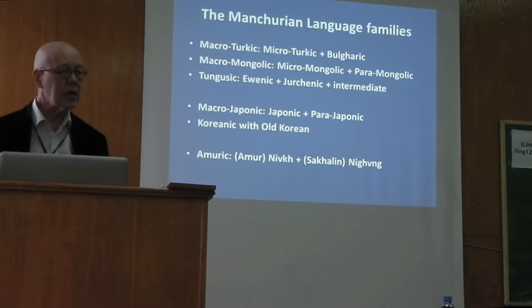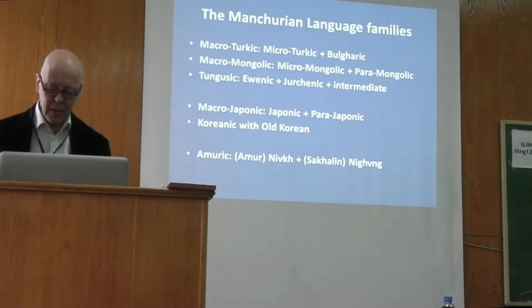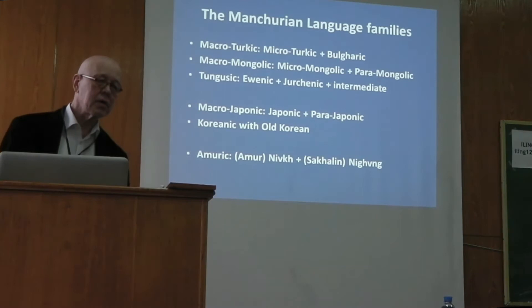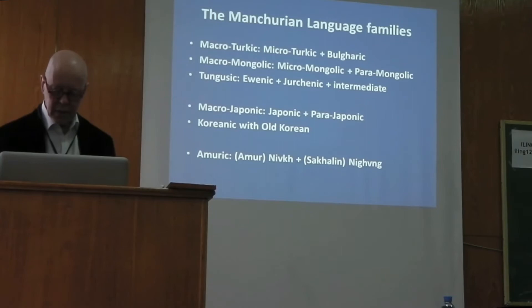The Amuric family, often called the Nivkh language, is very shallow. It has two branches: the Amur Nivkh and the Sakhalin Nivkh, also called Niguun. These are two closely related languages, but still at a level where mutual intelligibility is not always possible.